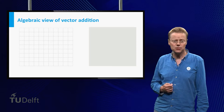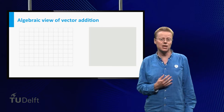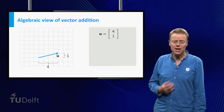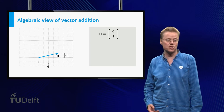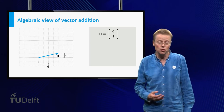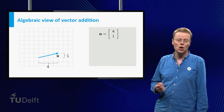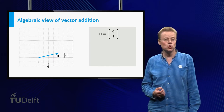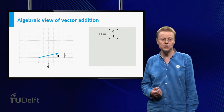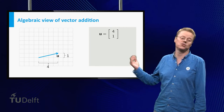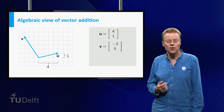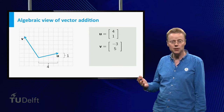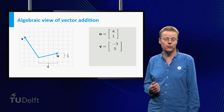Let us now look at vector addition and scalar multiplication from the algebraic point of view. The standard algebraic representation of a vector in two-dimensional space is by its endpoint, assuming that the vector starts at the origin. The coordinates of the endpoint are stacked on top of each other and collected between two tall brackets — for instance (4, 1) and (−3, 5). The numbers 4 and 1 are called components of the vector (4, 1).